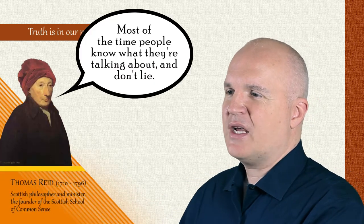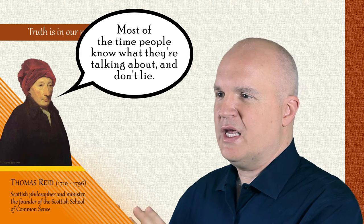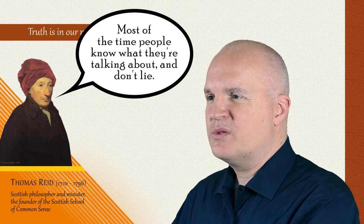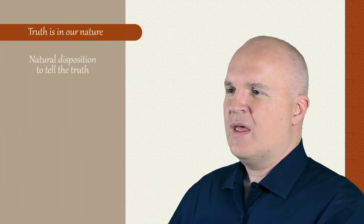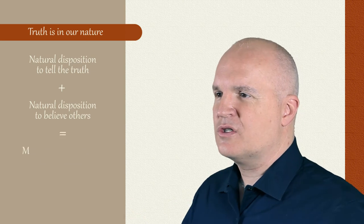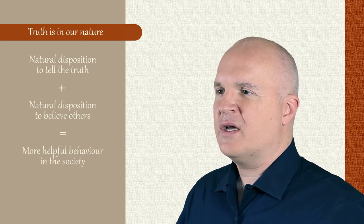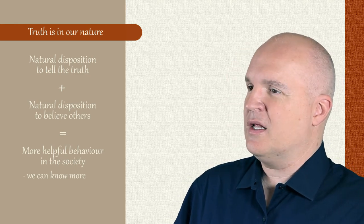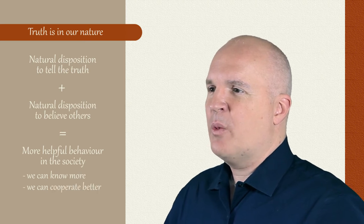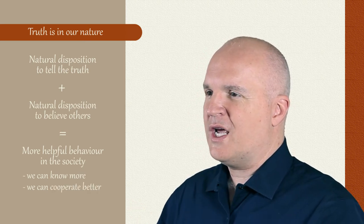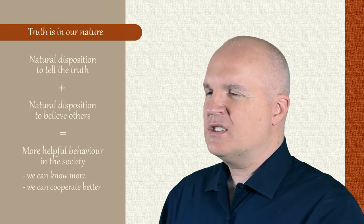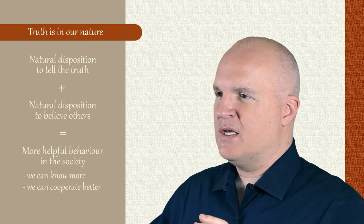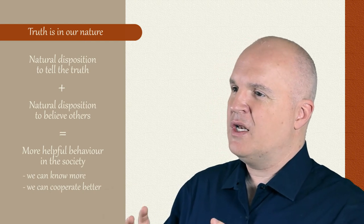And this takes us back to Reed's view. So Thomas Reed believed that we have a natural disposition to tell the truth, just as we have a natural disposition to believe what other people tell us. Those two combined mean, as social creatures, we're going to help each other out all the time. I can't know everything firsthand. I can't know that you're to be trusted firsthand, at least not in every case. But we need to share information with one another if we're going to work as a social being. Our societies depend upon an overall level of trust and informativeness, and it could be that we're that way by our very nature.